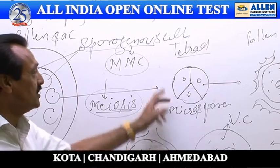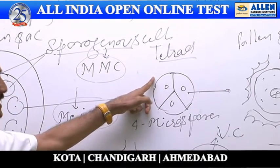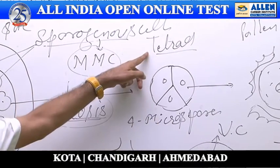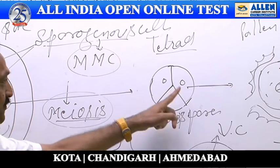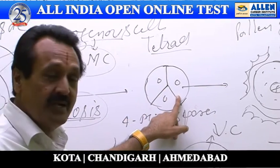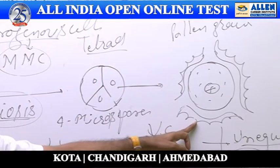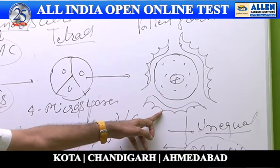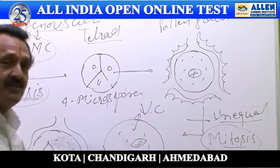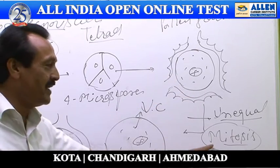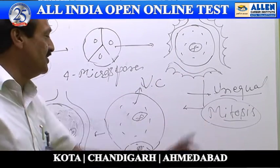All four microspores remain attached together, and this stage is known as a tetrad. Every microspore of the tetrad during further development finally changes into a pollen grain.